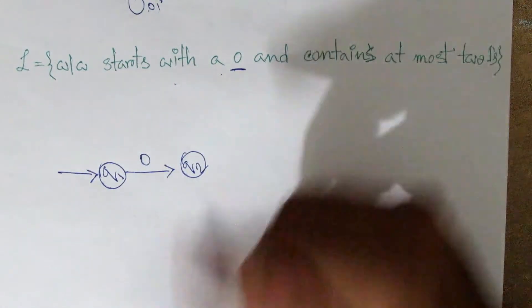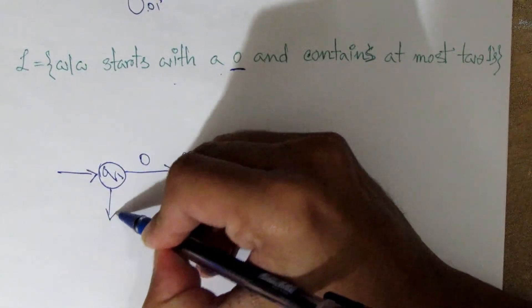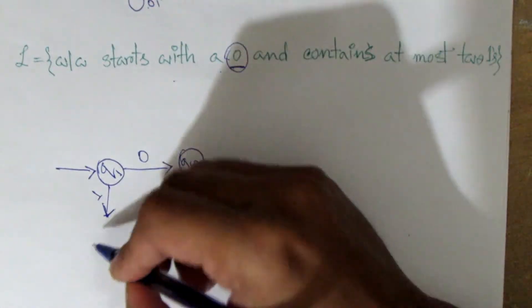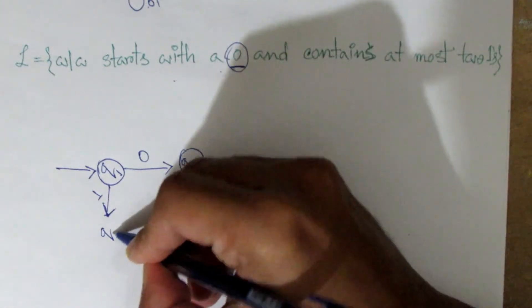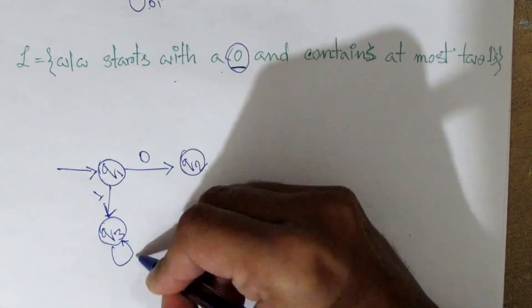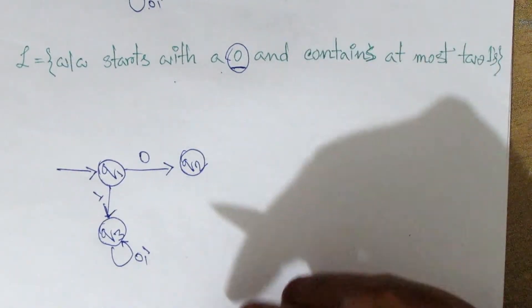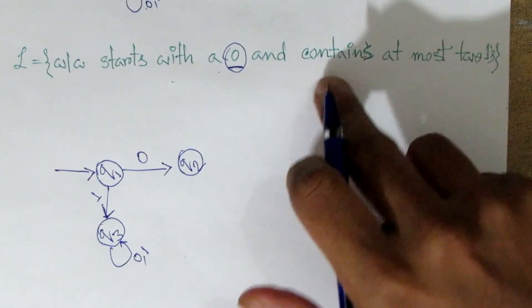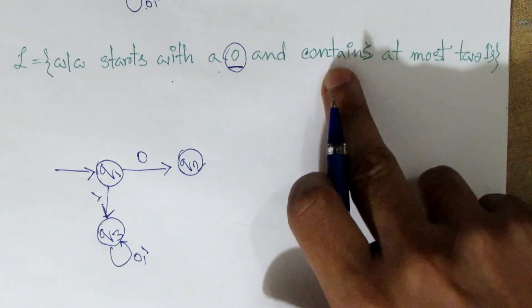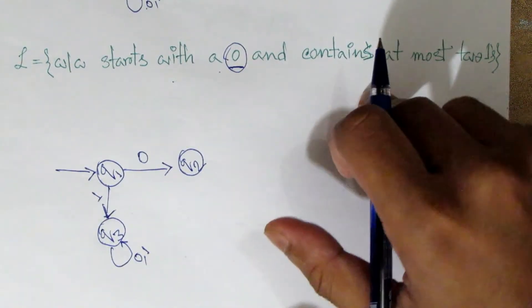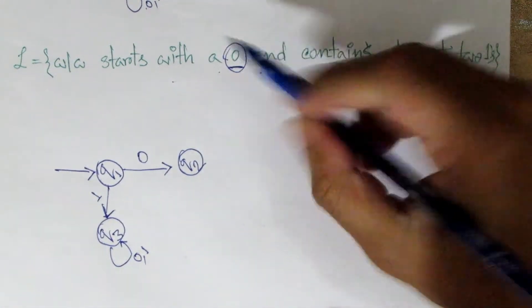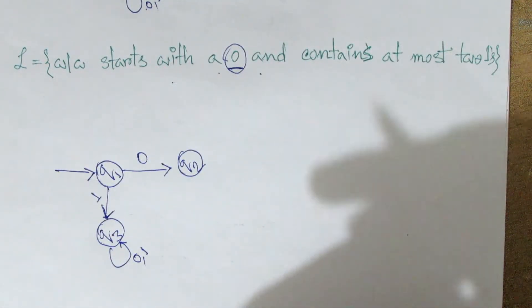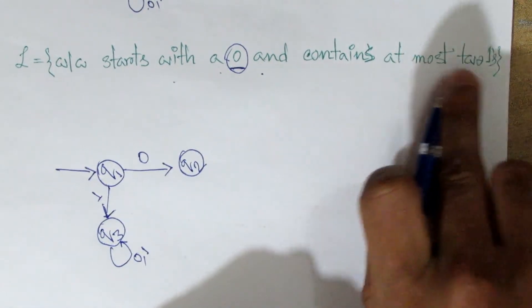Here we have deadlock. Q3 is deadlock. Here we have the contents of at most two ones. We have done an example earlier. Here we have the end of the data condition, so the data condition can be combined with the DFA design. Here we have the contents of at most two ones.